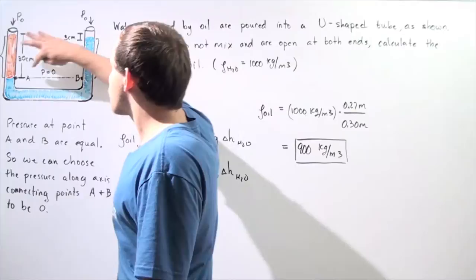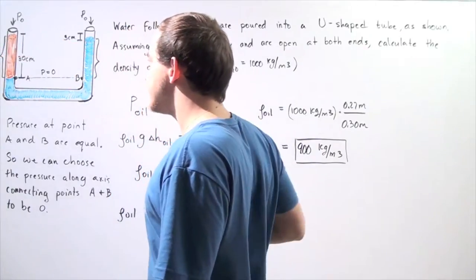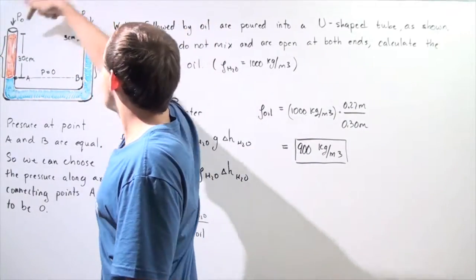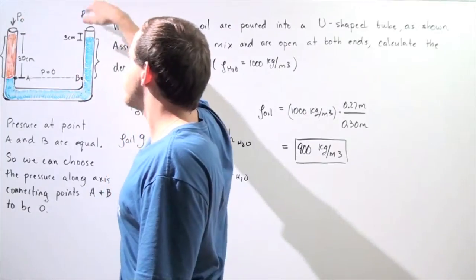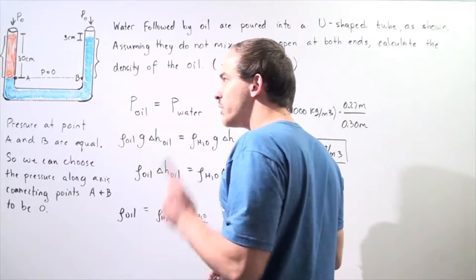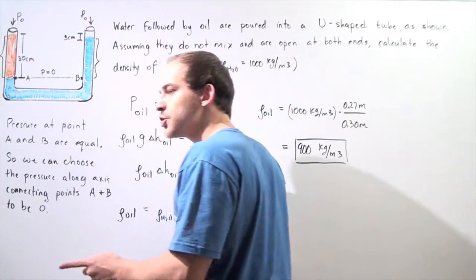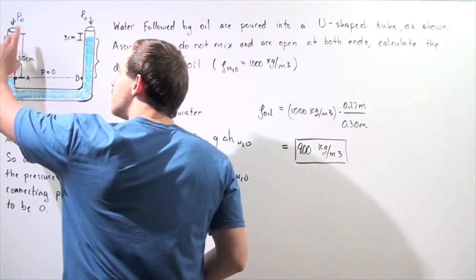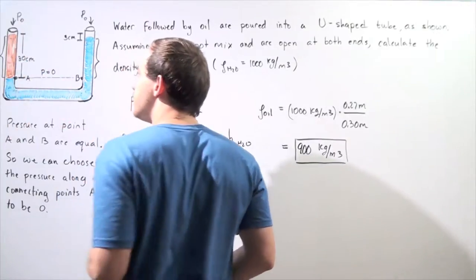Because the pressure along this axis is zero and the pressures at each end is the same exact pressure, to calculate the density we simply realize that the pressure created by the oil, which is a height of 30 centimeters, is equal to the pressure that's created by this height of water.